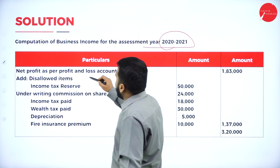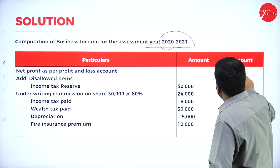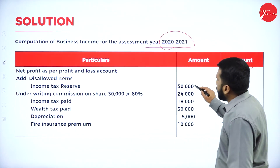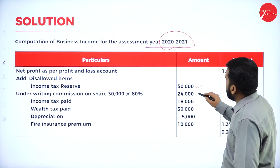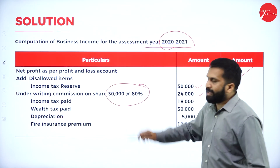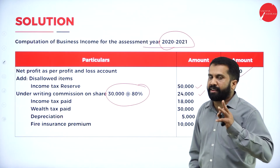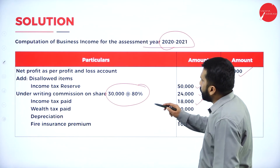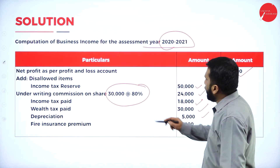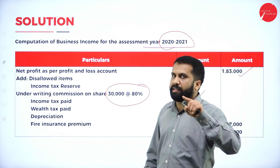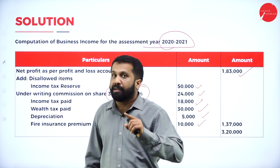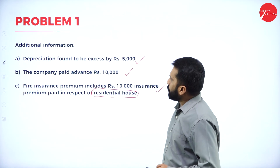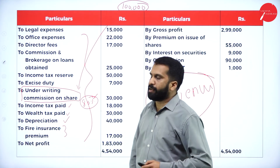Net profit as per profit and loss account: 1,83,000. Add disallowed items: income tax reserve, underwriting commission on shares — 80% of your value, because only 80% is disallowed. Income tax paid, wealth tax, depreciation, and fire insurance — we take only 10,000, because 10,000 worth belongs to personal residential property. All these disallowed items you will find on the debit side of the question.